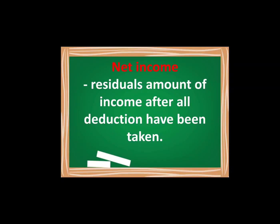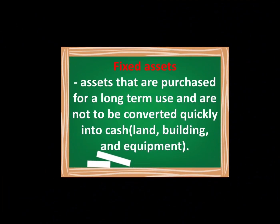Net income is the residual amount of income after all deductions have been taken. For example, if your gross income is 10,000 and there are deductions such as SSS of 500, Pag-IBIG, and other deductions, and you end up with 8,000, that is your net income. Net income already has deductions applied.